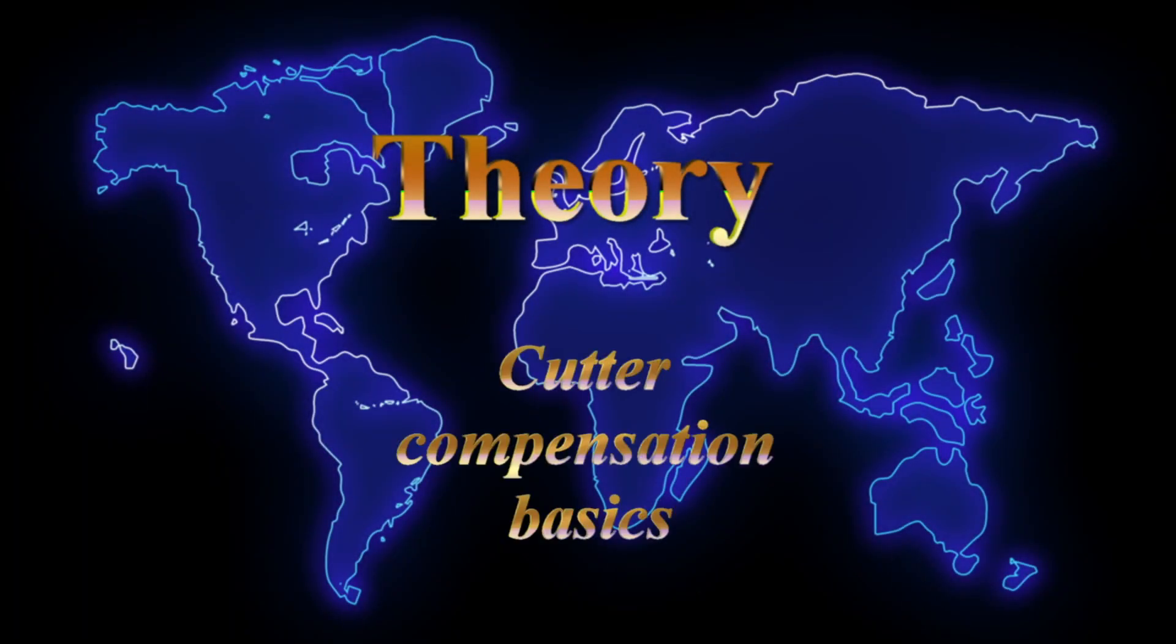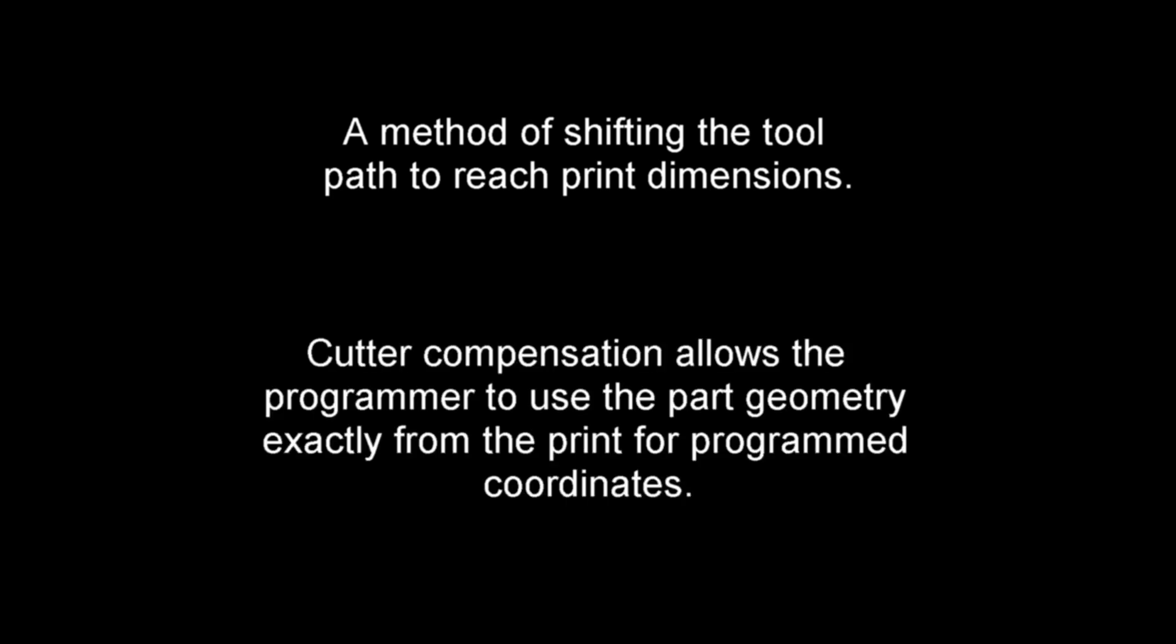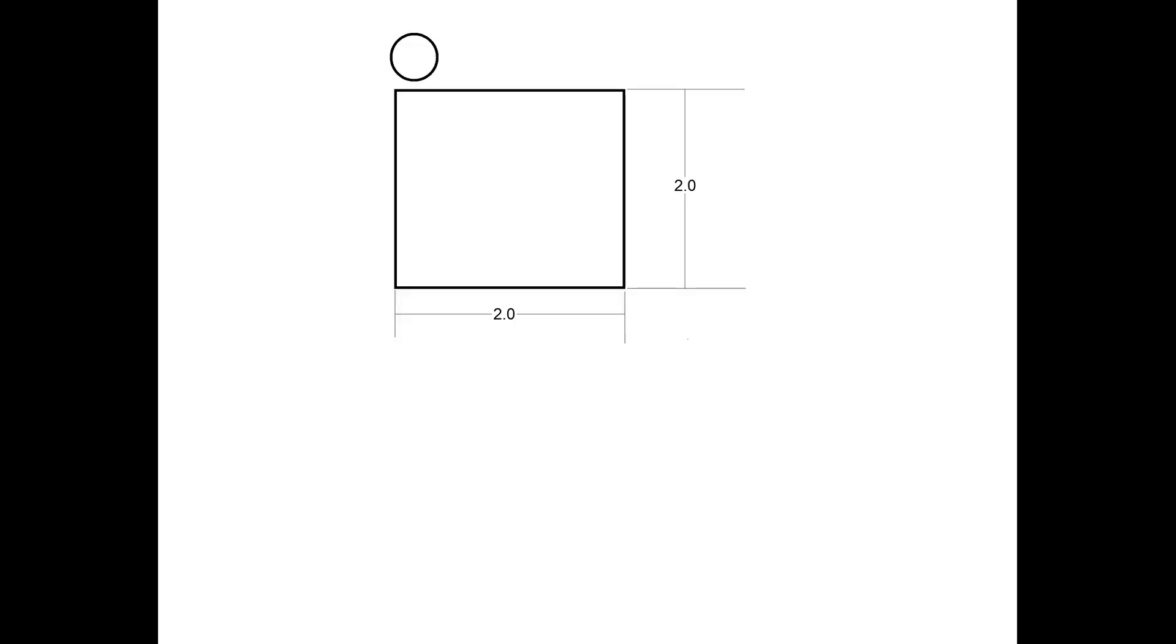This is Cutter Compensation Basics. What is Cutter Comp? It's a method of shifting the tool path to reach print dimensions. Cutter Compensation allows the programmer to use the part geometry exactly from the print for programmed coordinates. Without using compensation, the programmer has to know the cutter size and offset the programmed coordinates for the geometry by the amount of the radius. Now what it means is this. When you set up the machine, it needs to know how big the tool is, so it can calculate the distance to offset the tool center line from the part edge at dimension. Meaning a good part.